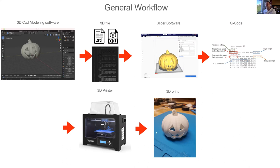The slicer software converts the file into something called G-code, also known as geometric code. G-code is a series of commands that tells the specific machine what to do — how to move the motors, how to heat the filament, and things like that — to cause the 3D printer to generate a 3D print. So this is an overview of some key terms.